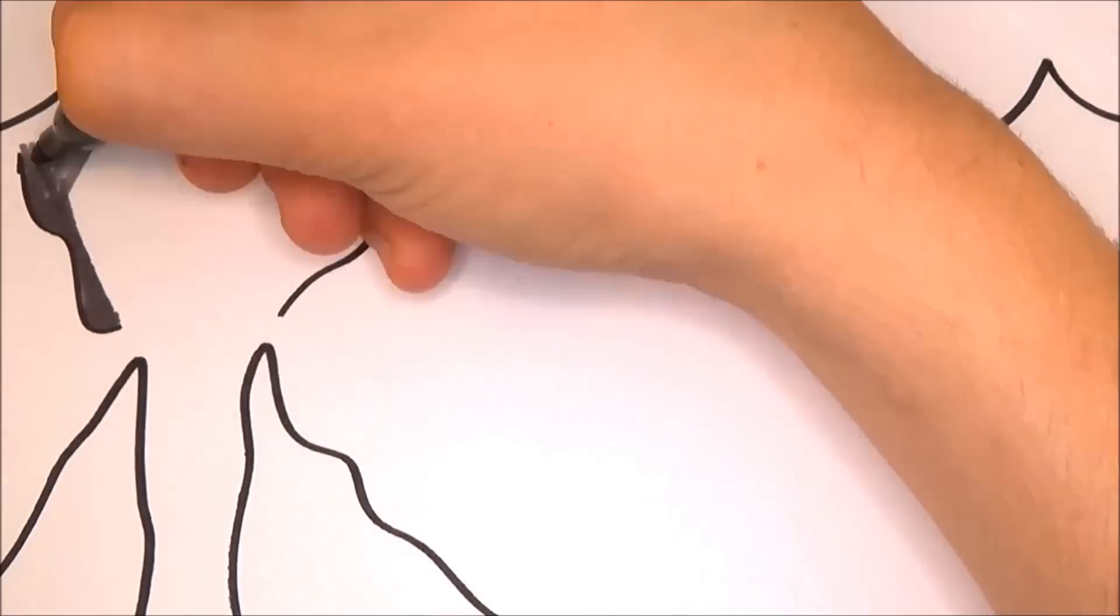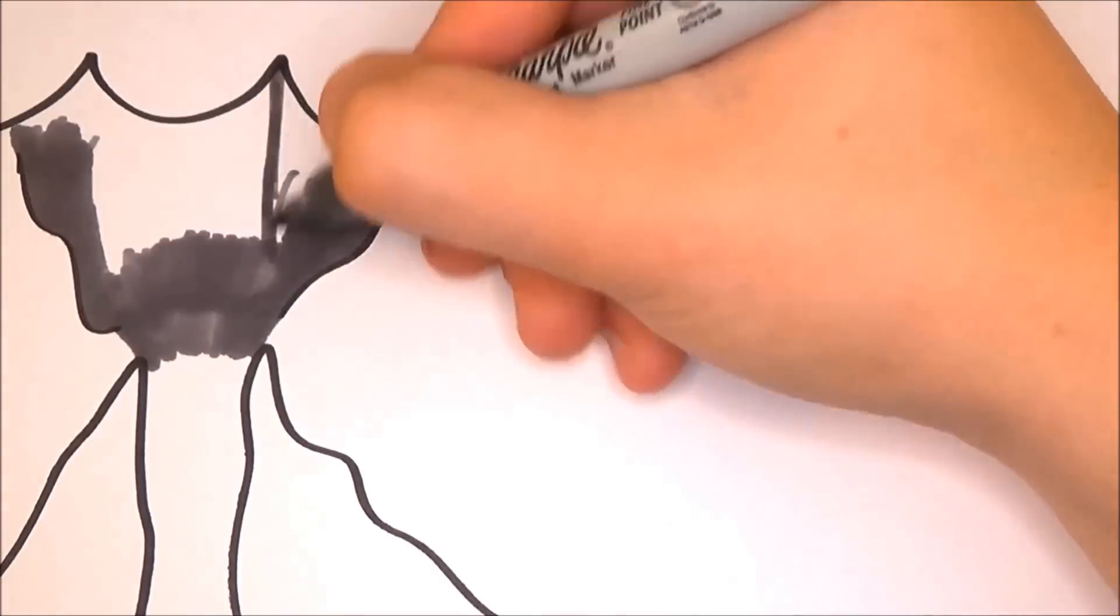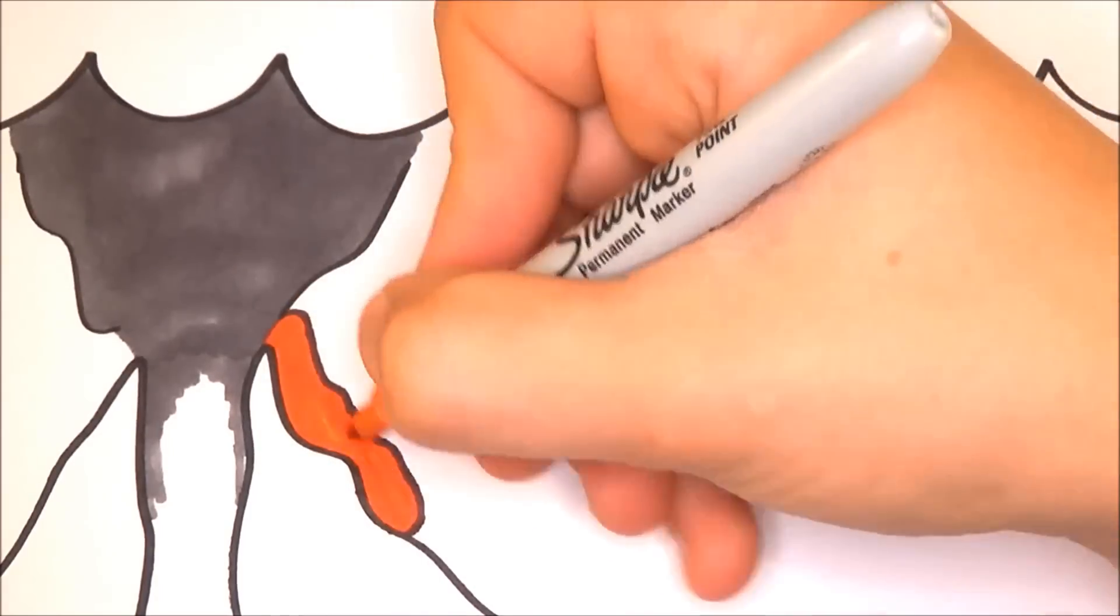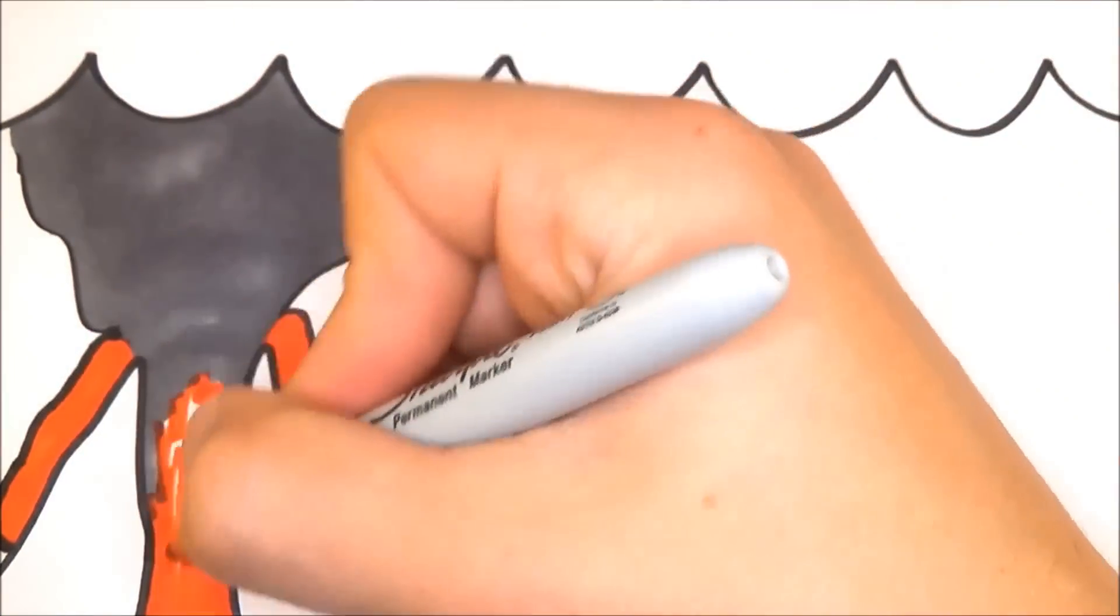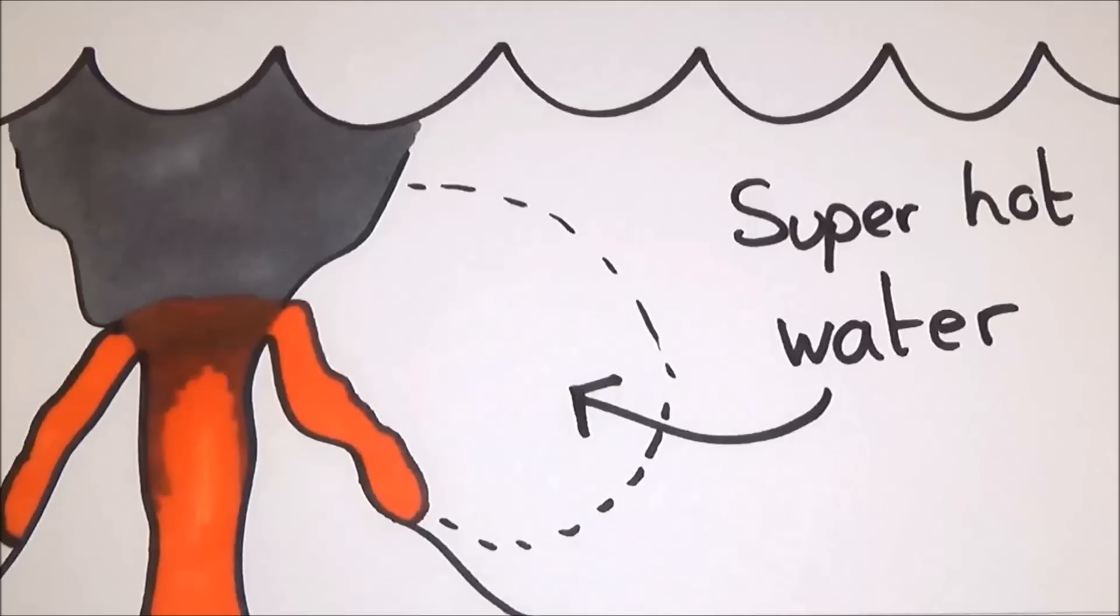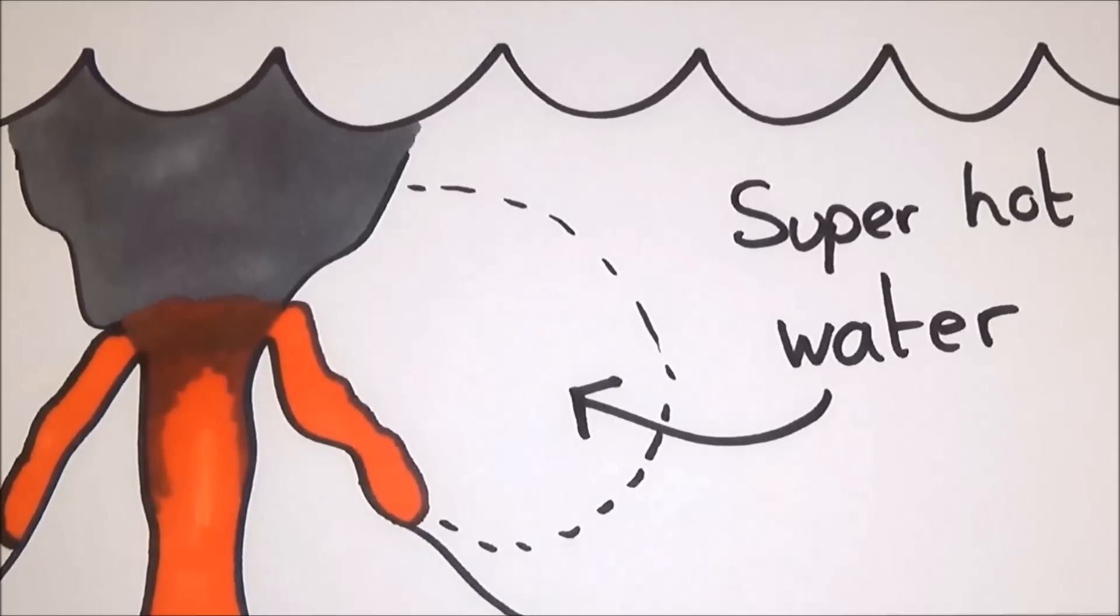The final process is called submarine volcanism. That's an underwater volcano eruption. This works very similar to the hydrothermal vent where the oceanic basalt, that's the really quickly cooled lava, reacts with the salt water to make it take in even more salt from its surroundings.